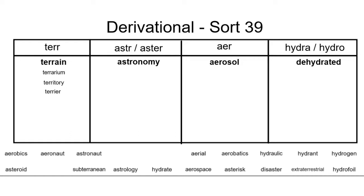Let's move on to our first Greek root, aster. Aster refers to stars, so astronomy is the study of stars and planets. You know that an astronaut is an explorer that goes up into space. You may not be familiar with the fact that the root naut refers to sailing, so an astronaut is literally a star sailor.